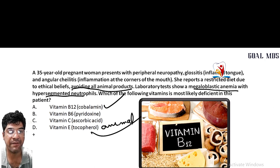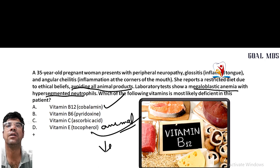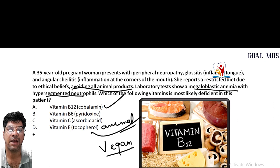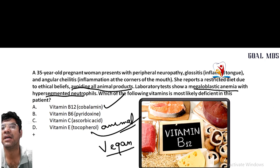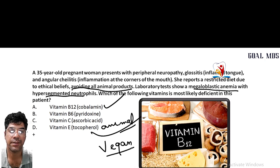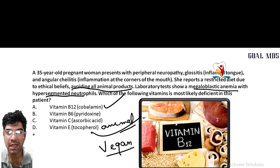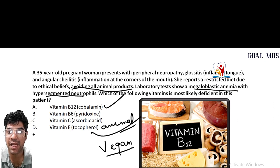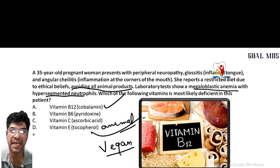Remember that B12 deficiency is found in animal-based foods, so strict vegetarian diets are at risk. Vitamin B12 is essential for normal functioning of the nervous system, RBC production, and DNA synthesis. Its deficiency can result in various neurological symptoms, megaloblastic anemia, and symptoms like glossitis and angular cheilitis.